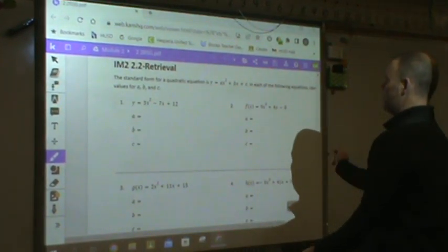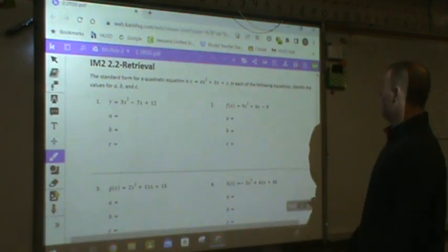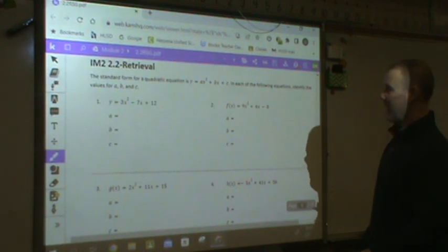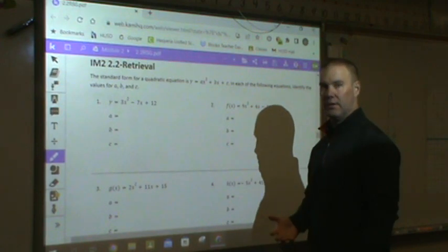The standard form of a quadratic equation is Y equals AX squared plus BX plus C. In each of the following equations, identify the values of A, B, and C. A, B, and C are numbers.